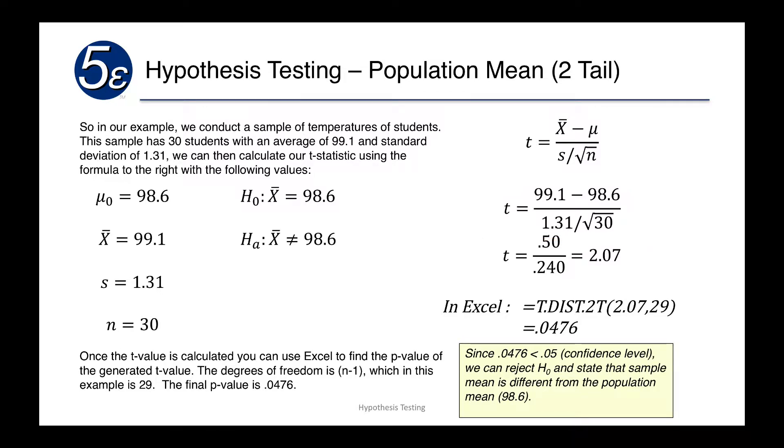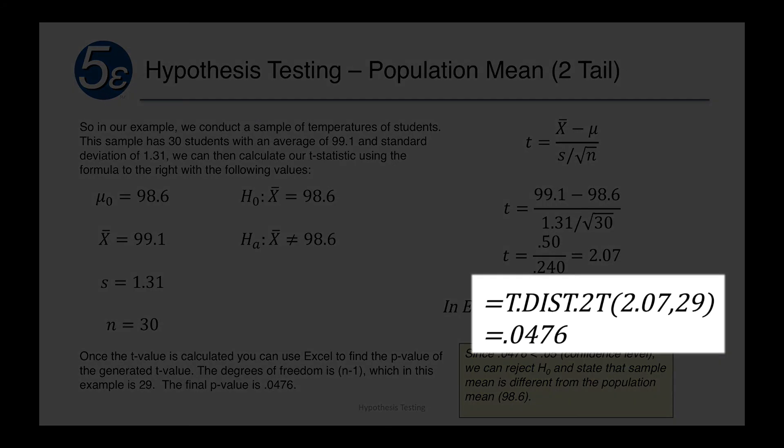We'll put this into Excel. Because this is a t-statistic, we're going to use the t-distribution — t.dist.2t — because this is a two-tail distribution. Since we have an equal sign, we're looking for things on both the left and right of the mean. We put in our 2.07 from the t-statistic and 29 refers to the degrees of freedom — recall that degrees of freedom equals n minus 1, the number of observations minus 1. When we do that, we get a p-value of 0.0476.